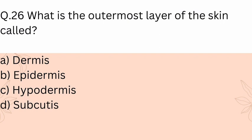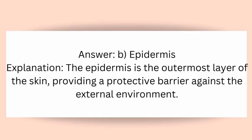Question 26: What is the outermost layer of the skin called? A) Dermis, B) Epidermis, C) Hypodermis, D) Subcutis. Answer: B) Epidermis. Explanation: The epidermis is the outermost layer of the skin, providing a protective barrier against the external environment.